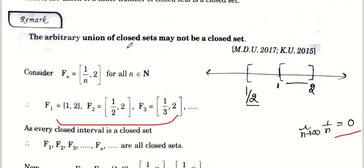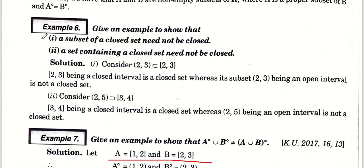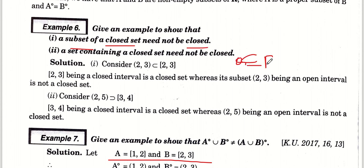Last example of this exercise: given an example to show that a subset of a closed set need not be closed। Closed set का subset closed नहीं होता, यह prove करना है। Simple example: Q subset of R है, R closed है लेकिन Q closed नहीं है। या closed interval [3, 4] closed है, इसका superset कोई भी open interval बना दो - वो closed नहीं है। इसके साथ आपकी exercise 1.2 complete हो जाती है। Thank you।